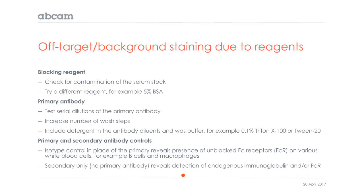Finally, moving to reagents — off-target background staining due to a reagent difficulty. If blocking is insufficient, check for contamination of the serum stock, or try a different reagent such as 5% BSA. For the primary antibody, test serial dilutions — using a lower concentration and incubating at 4°C overnight may reduce background staining.